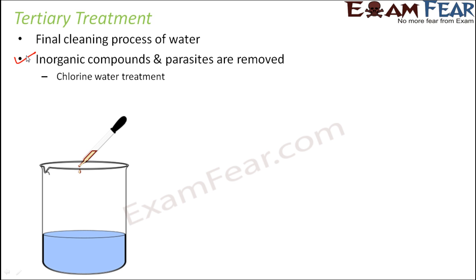One way of doing tertiary treatment is chlorination, or chlorine water treatment. Here, chlorine is added to water in the form of drops. Chlorine is extremely toxic, so a very small amount needs to be added to the water. That chlorine, being toxic, is capable of killing all the microorganisms and parasites that might have been present in the water.